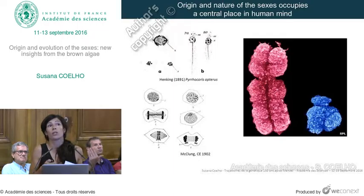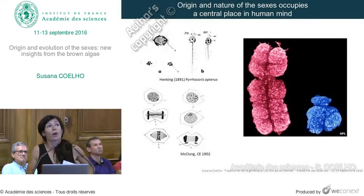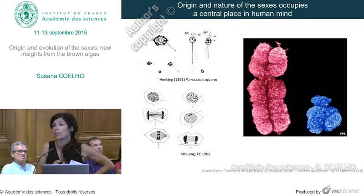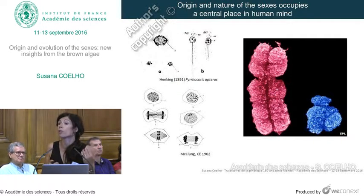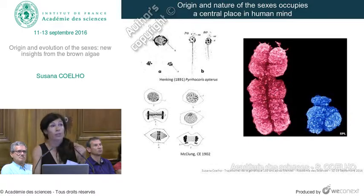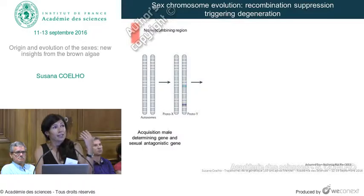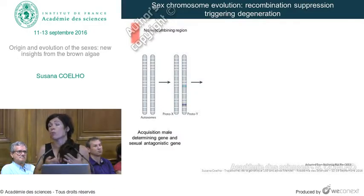Male and female individuals are determined by sex chromosomes. The female has two X chromosomes; the male has an X and a Y chromosome. What is quite striking immediately is that the Y chromosome is very, very small compared to the X chromosome, and people have been looking at this quite frequently.